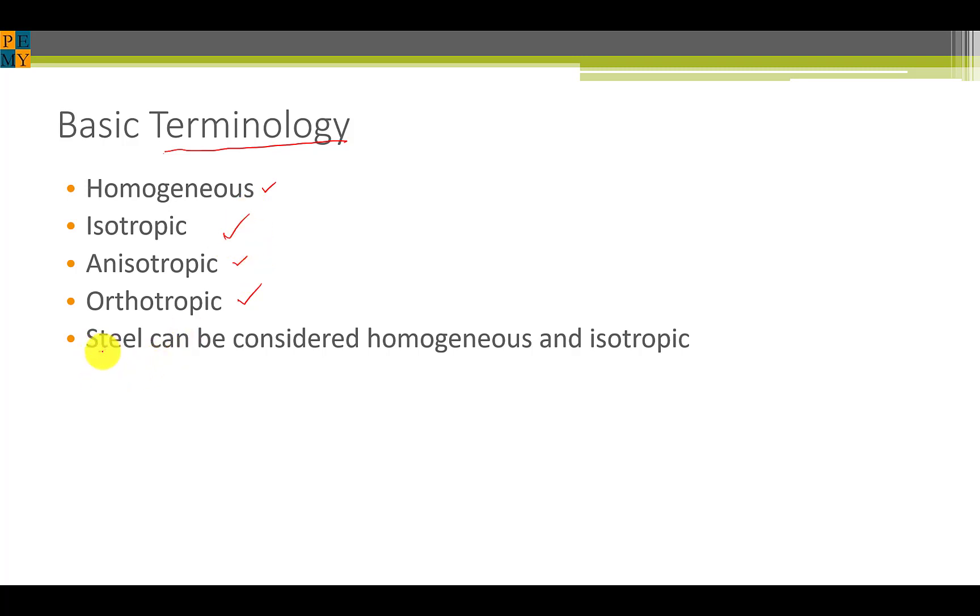We're talking about steel in this series of videos and the two most important points about steel are that it is homogeneous, it's the same throughout, and it's isotropic. None of its properties are different in one direction as opposed to another.